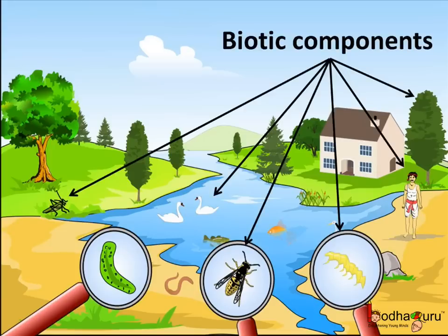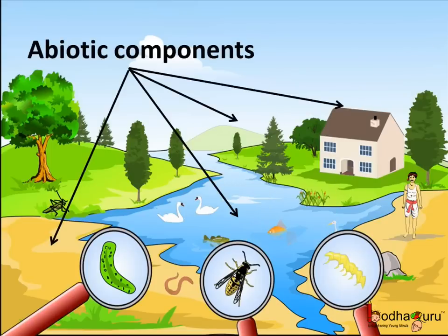The living components of the environment are called biotic components. So we can say this cockroach, or the bird, or the microbes, human beings, and plants — all are the biotic components of the environment. The rest are abiotic components, like the non-living things.